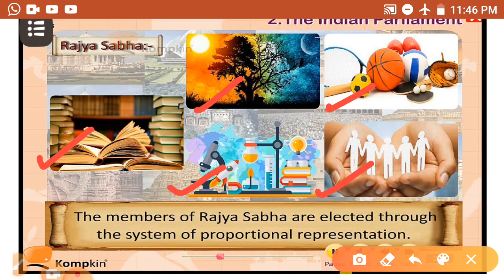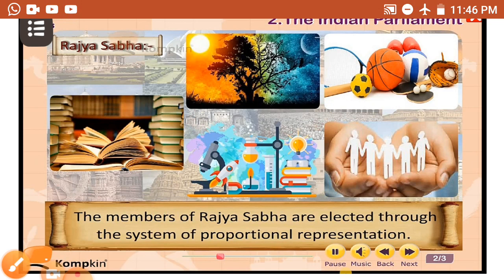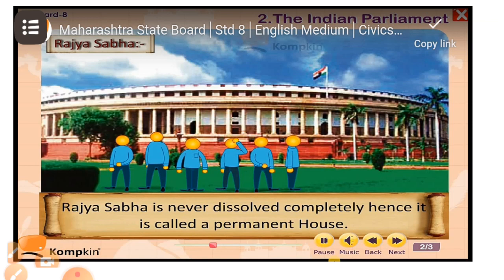The members of Rajya Sabha are elected through the system of proportional representation. Rajya Sabha is never dissolved completely; hence, it is called a permanent house. One-third of the total members of Rajya Sabha who have completed their tenure of 6 years retire after every 2 years, and an equal number of new members get elected. Because members retire step by step, Rajya Sabha can function continuously.